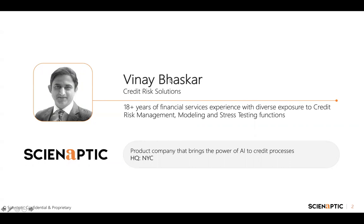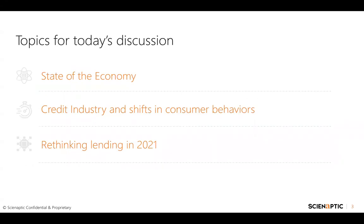Let me jump straight into the agenda for today's discussion. There are primarily three topics we are going to focus on. First, the state of the economy — a quick pulse check on where we are from an economic perspective. Second, what we have seen within the credit industry, particularly the shifts in consumer behavior, and how that translates into lending for 2021.